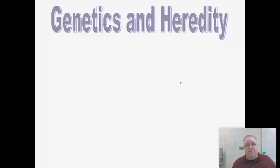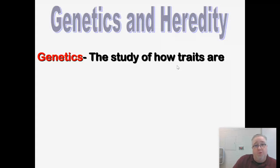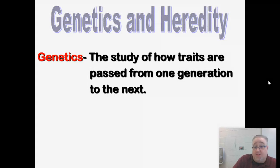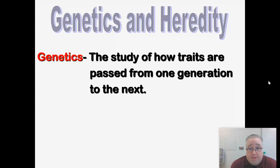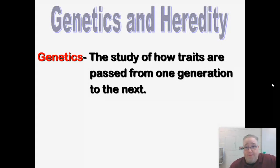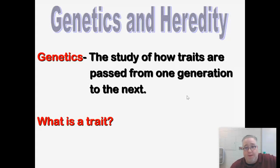Let's review a little bit before we get into some of the more difficult concepts. Genetics is defined as the study of how traits are passed from one generation to the next. For example, your blood type — whether you're type A, type B, or whatever type — is inherited from your parents. What blood type you have is determined by what genes your parents gave you. We're going to study blood typing as one of the traits in this unit.